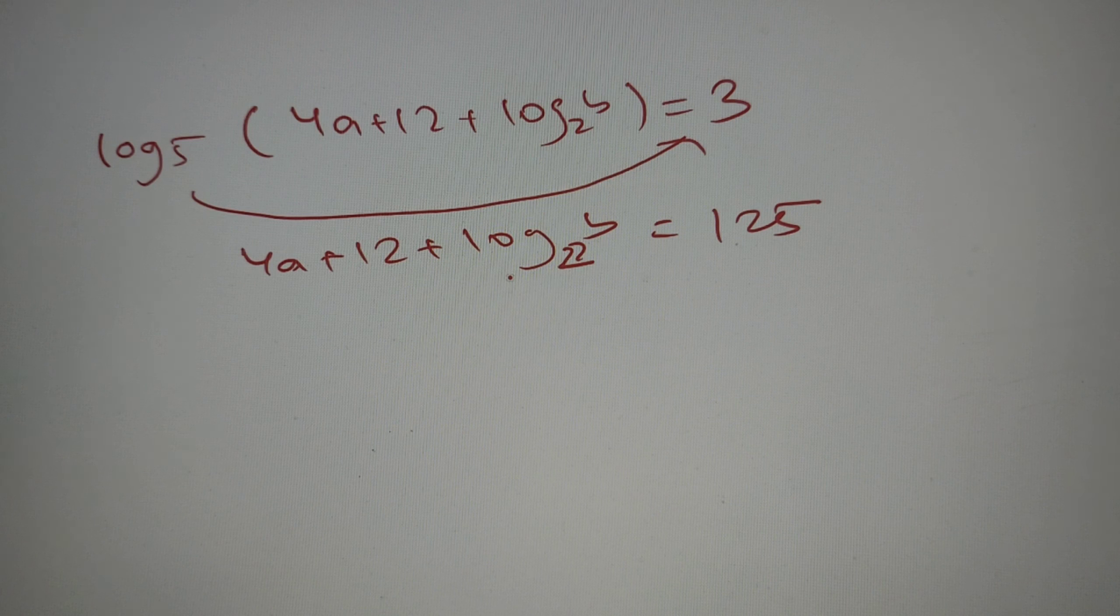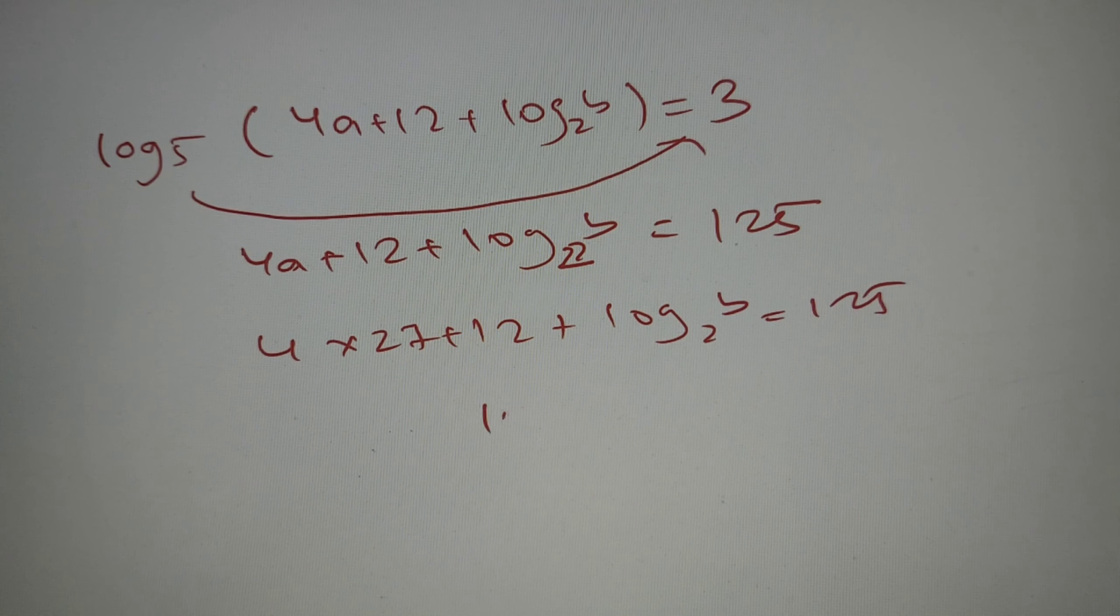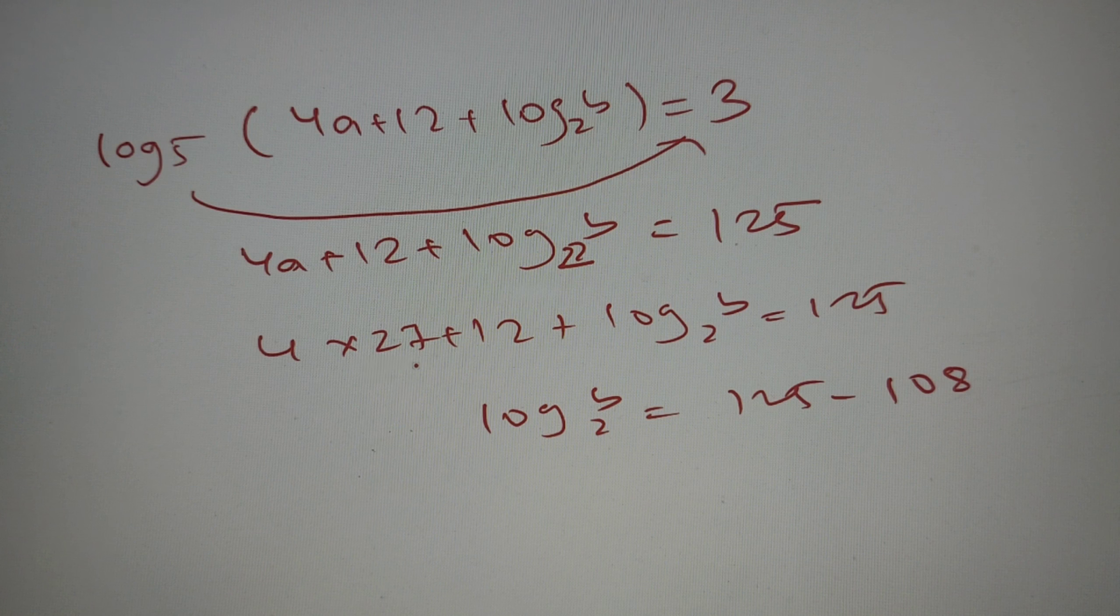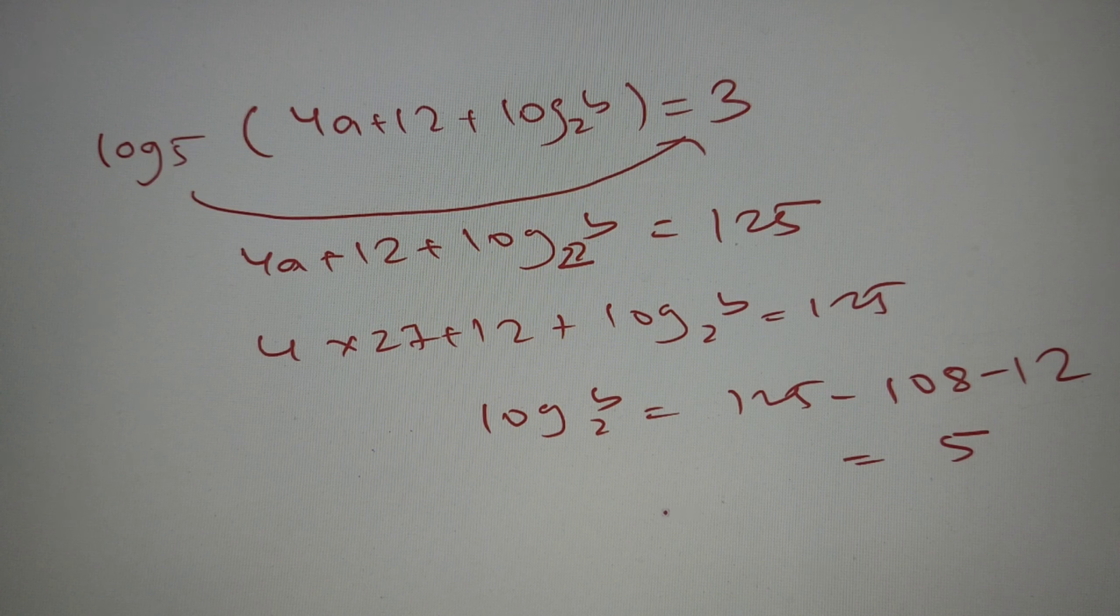Now we know the value of a. So 4 times 27 plus 12 plus log base 2 of b equals 125, or I can say that log base 2 of b equals 125 minus 108 (that is the value of 4 times 27) minus 12, that is equal to 120. So 125 minus 120 is equal to 5.